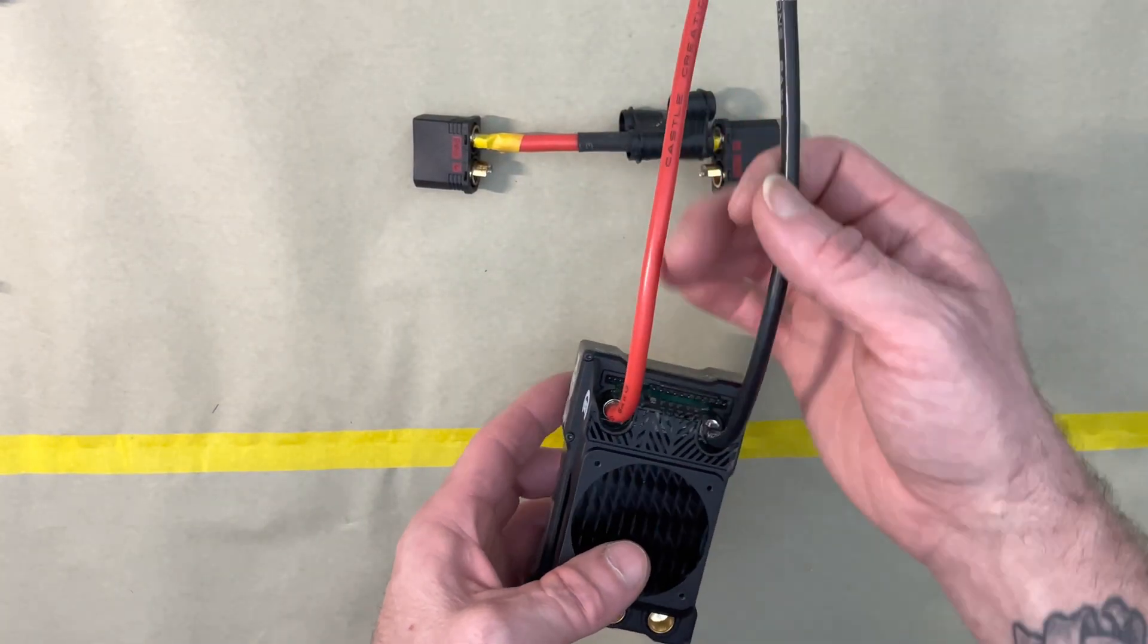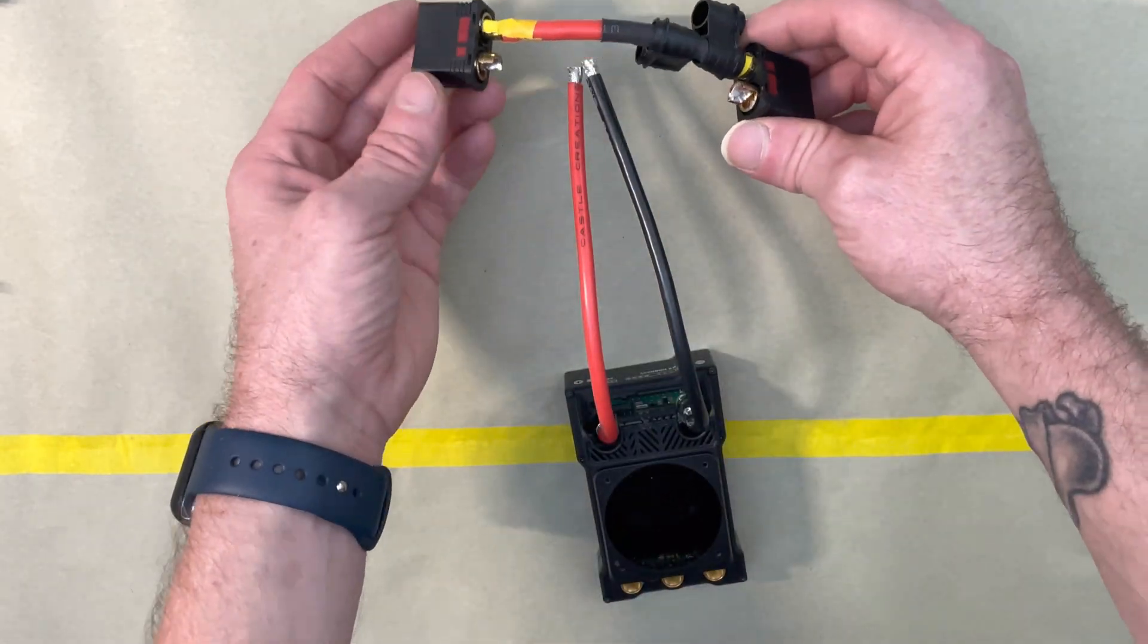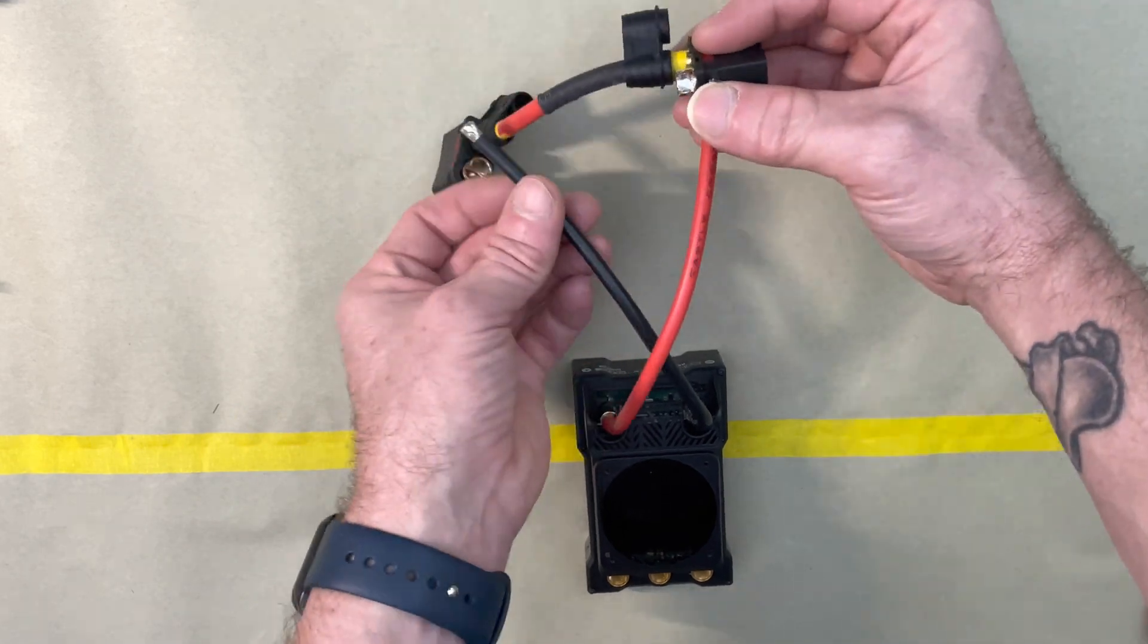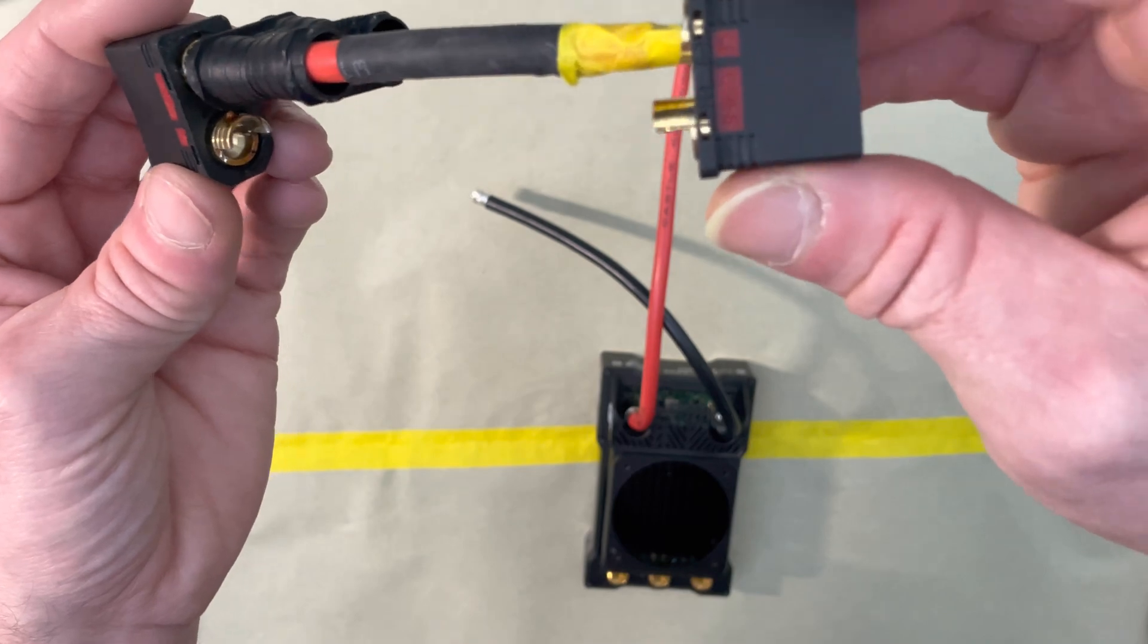Now you want to be sure that the way you're going to solder the connectors onto the speed control are in the position that you want things to be at rest. You don't want to accidentally solder it some mixed way around to where it's never going to stay straight and you have problems reaching your batteries to plug it in.